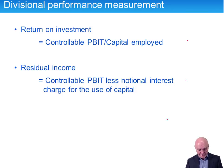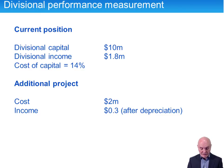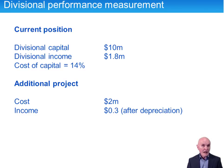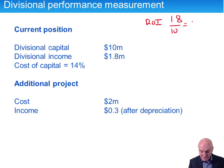Let's see these two methods in operation in some simple examples. We have a current position with the divisional capital, the divisional income, and a cost of capital of 14%. The division is thinking about whether or not it should take on an additional investment of 2 million, which is going to yield 0.3 after depreciation. All profits are after depreciation, but before interest and tax. For return on investment, the current ROI is 1.8 over 10, giving 18%.